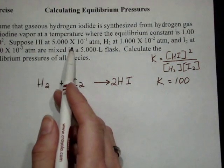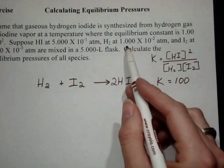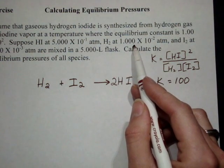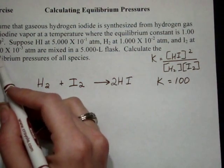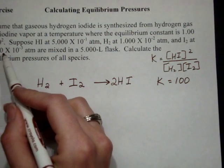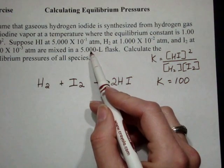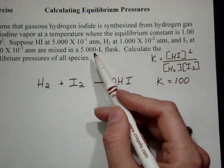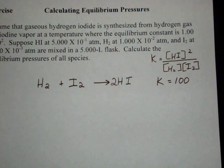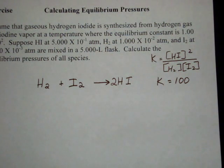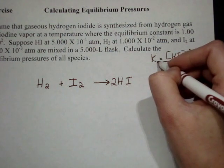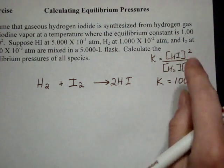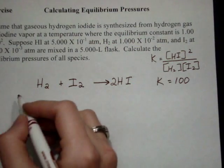Suppose HI at 0.5 atmospheres and hydrogen at 0.01 atmospheres and iodine at 0.005 atmospheres are mixed in a 5 liter flask. What I need to look at here is I'm looking at pressures to begin with. I can treat these as KPs instead of concentrations. But first I need to find out Q.